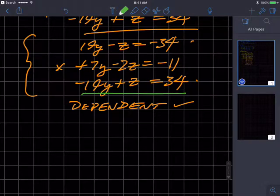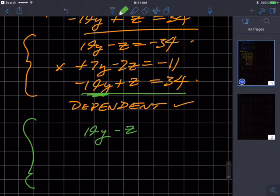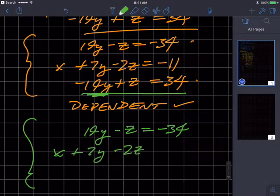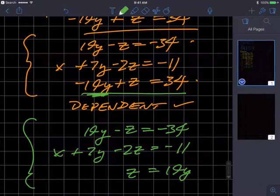We're going to take this and we're going to solve it for z. And so if I do so, I'm going to add 19y to both sides. So my new set of equations looks like this. 19y minus z equals negative 34. The middle equation is going to be x plus 7y minus 2z equals negative 11. And my third equation is going to look like this. z equals 19y plus 34, okay?